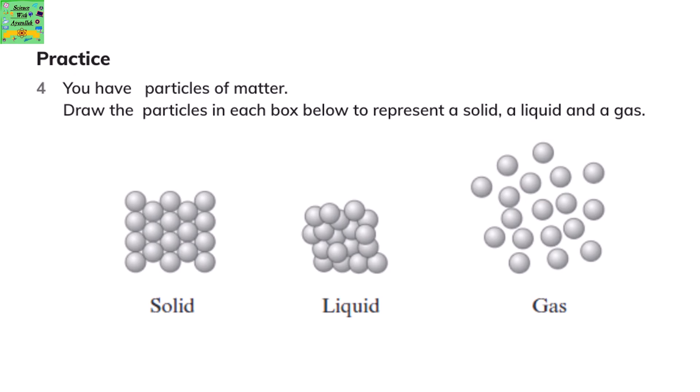Here have the particles of matter. Draw the particles in each box below to represent a solid, a liquid and a gas. So the solid is the particles that are tightly packed. Liquid are where the particles are a little bit looser packed. And gas is where the particles are widely spread.